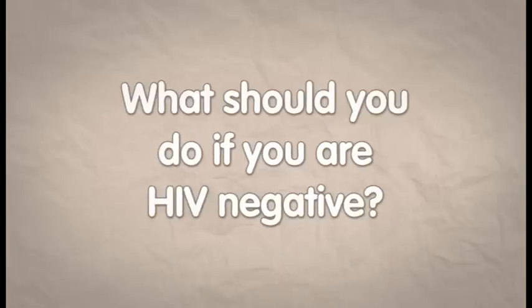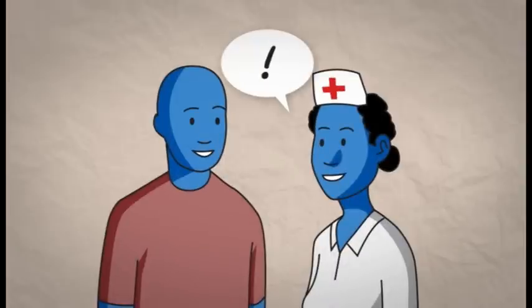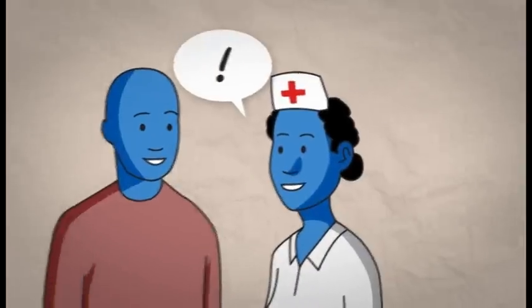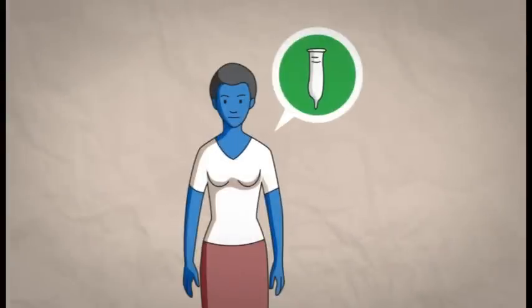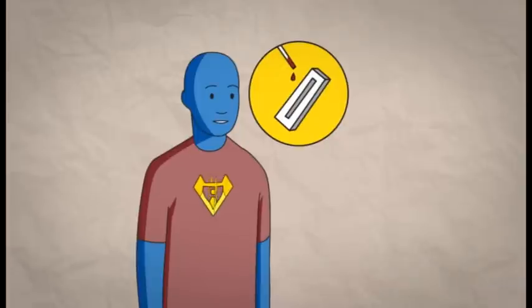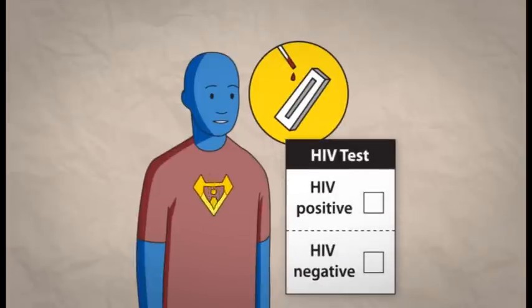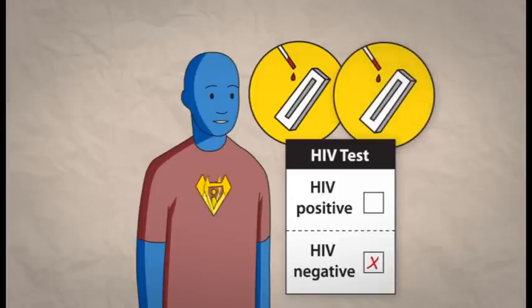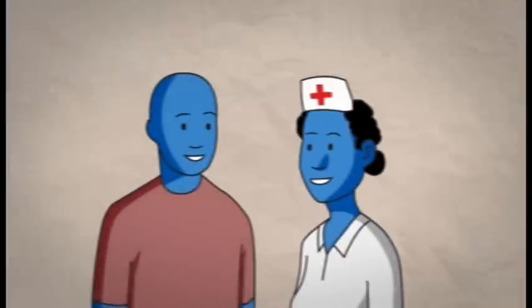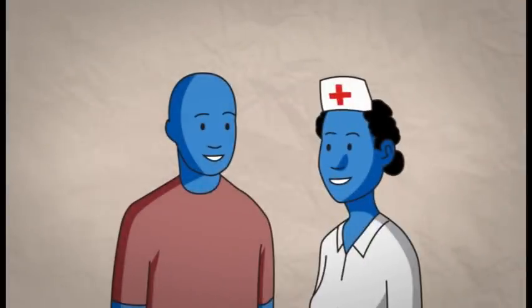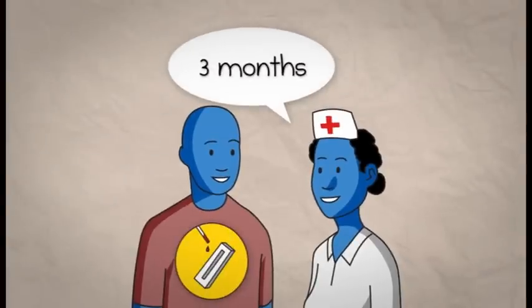What should you do if you are HIV negative? Learn what steps to take to reduce your risk of infection. Abstain from sex or use condoms every time you have sex. People who have recently become infected can sometimes have a negative test. You may need to have your HIV test repeated later. The person doing your HIV test can advise you on when you should be tested next based on your personal risk factors.